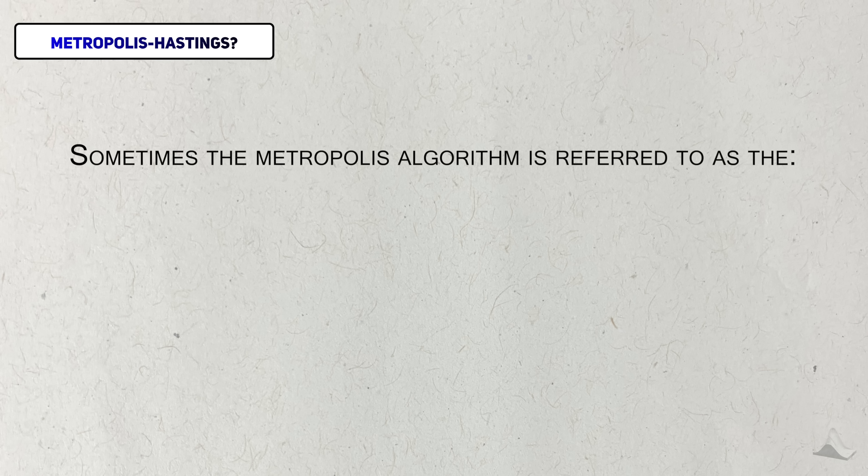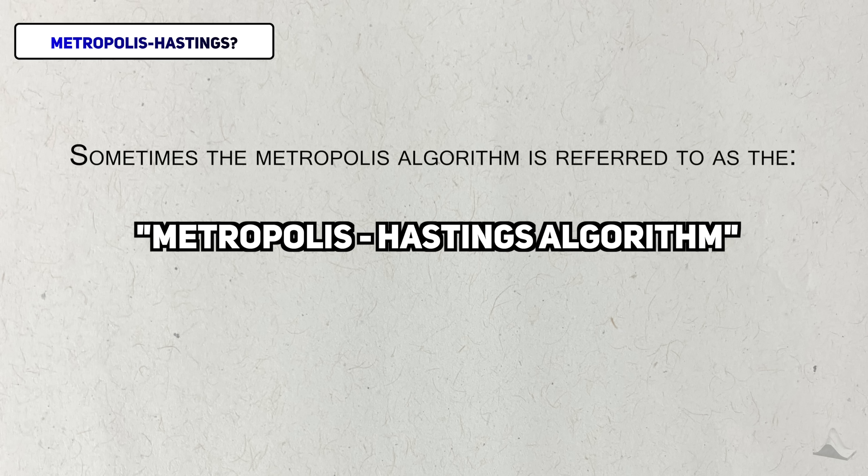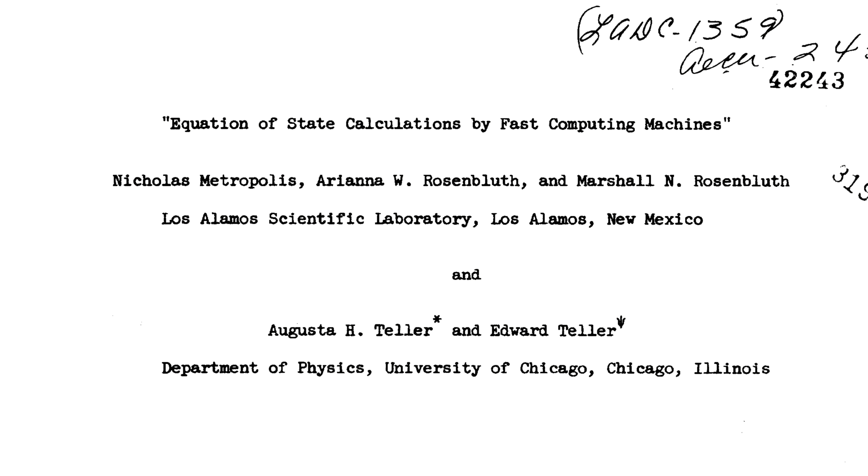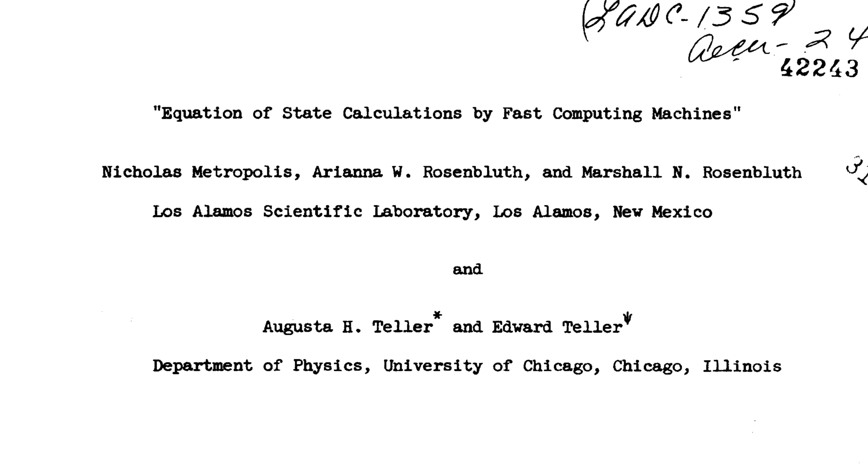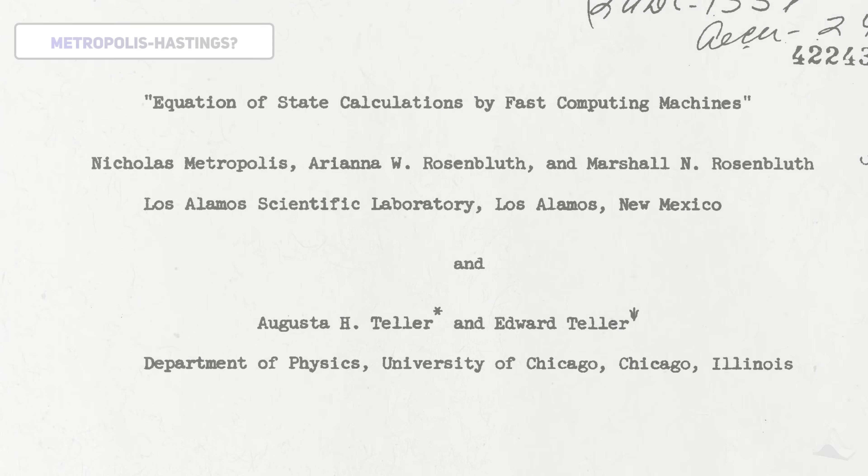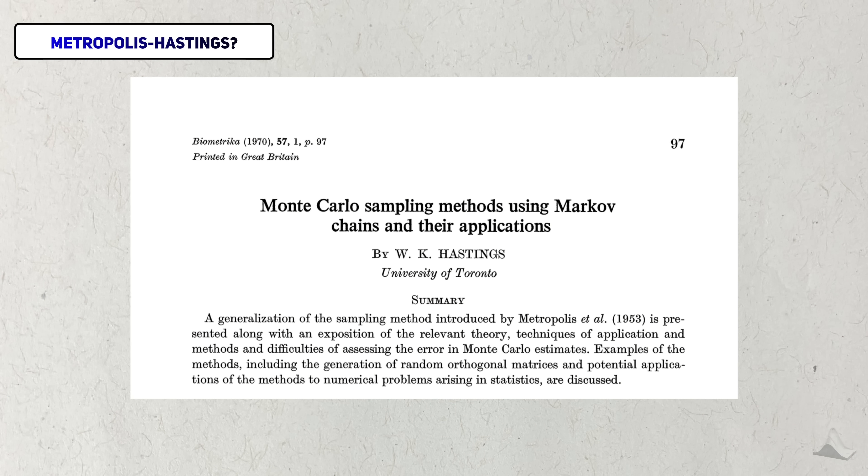Sometimes you'll hear the Metropolis algorithm be referred to as the Metropolis-Hastings algorithm. Remember that Metropolis' original paper was a physics paper, largely inaccessible to statisticians of the time. It was W.K. Hastings who expanded on Metropolis' work and put it into terms that statisticians would better understand.